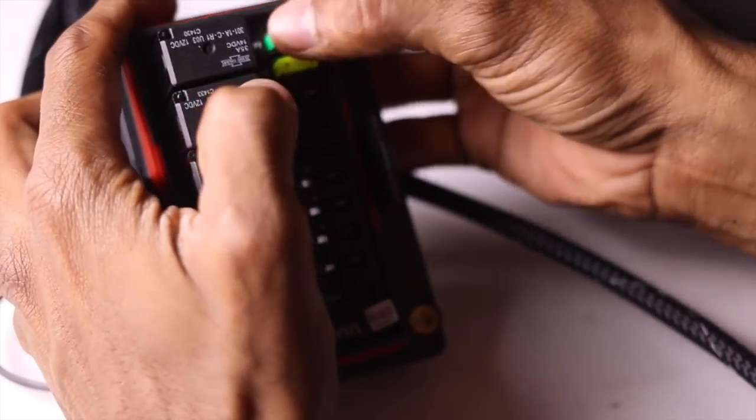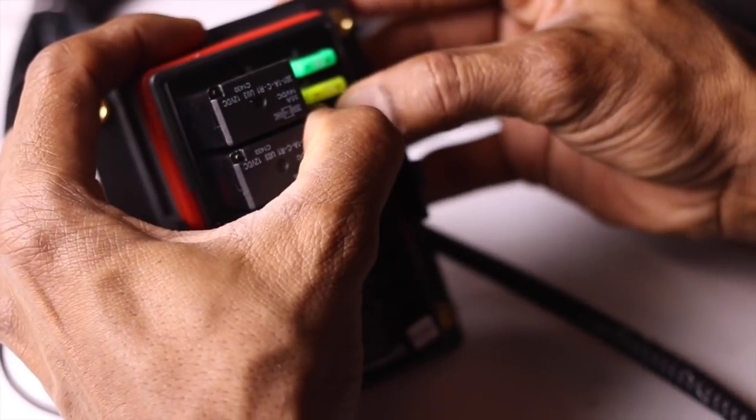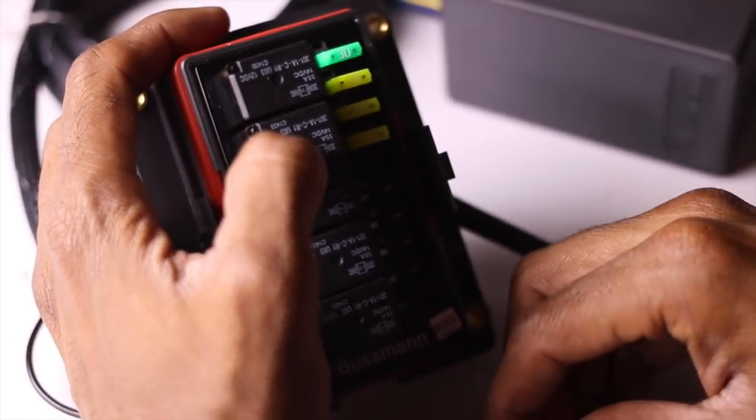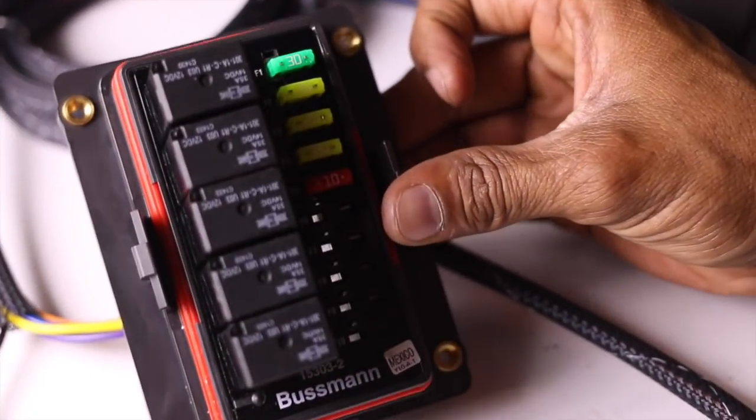And now finally start installing all the fuses into the panel according to the accessories you may have. Just make sure when installing the fuse it matches the watts on your accessory.